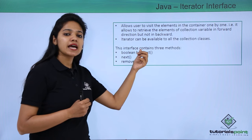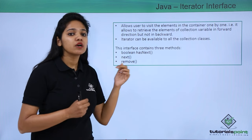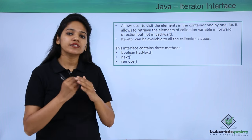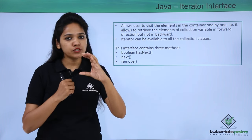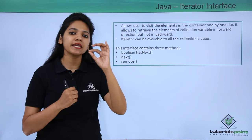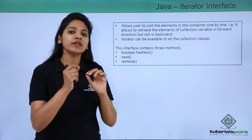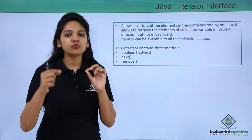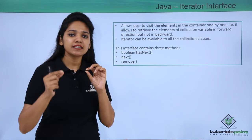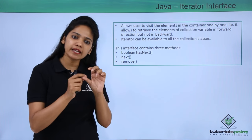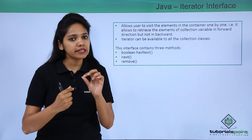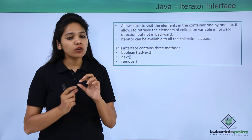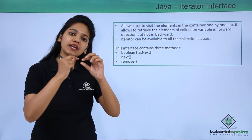There are certain methods available to work with the iterator interface. The first one is the hasNext method. This method will return true if there is an element after the current element. For example, if we are traversing an object with five elements — a, b, c, d, and e — when the traversal reaches e, hasNext checks if there is any element after e. If there is, it returns true; if not, it returns false.